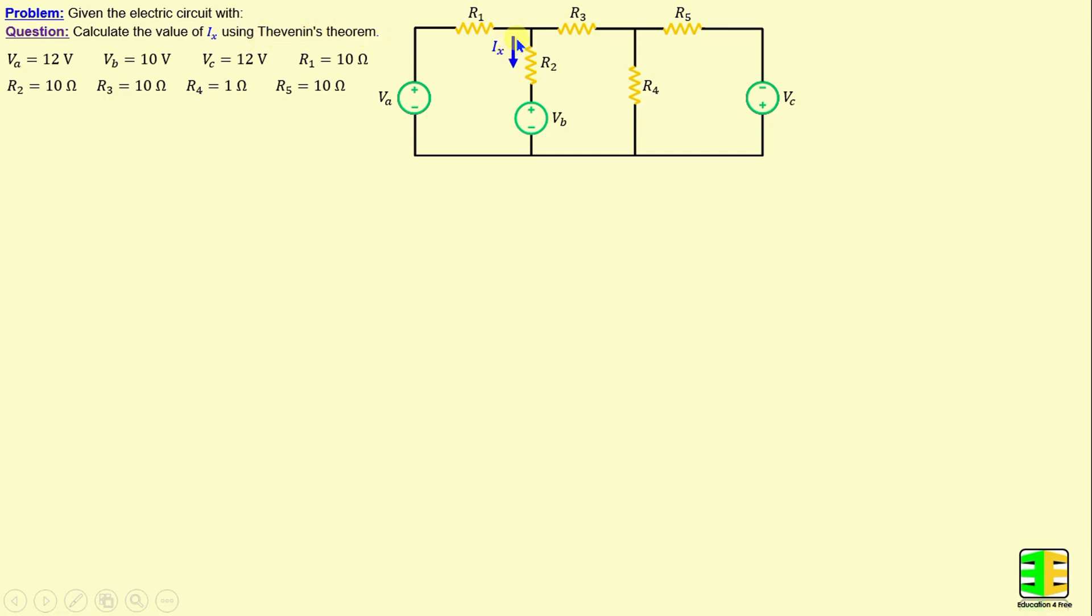IX is the current through the resistor R2. Let's move on to the solution by applying Thevenin's Theorem between terminals A and B. We can replace this circuit with the voltage source in series with the resistor, which will be denoted as VTH and RTH. In our example, RTH is connected in series with R2, which plays the role of the load.